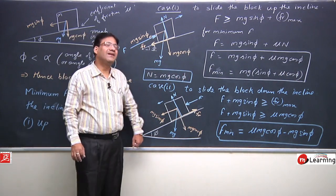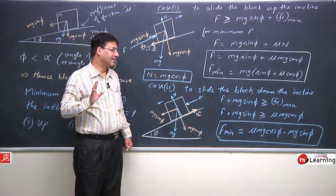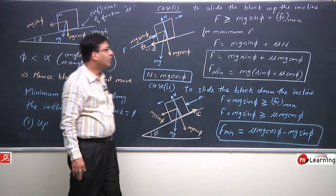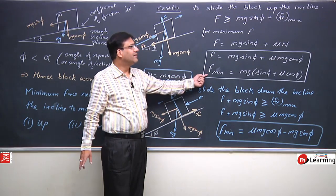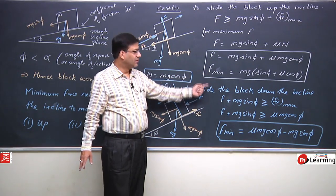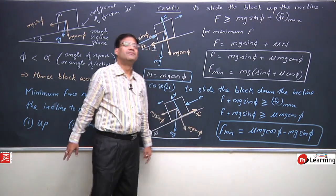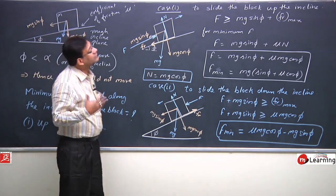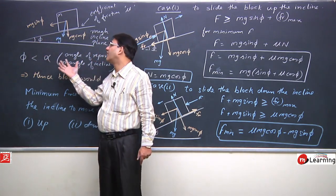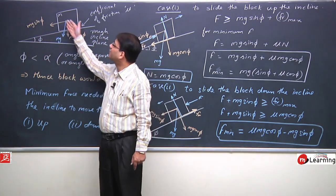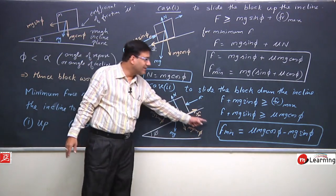To summarize: the force to take the block up the incline is mg(μcosφ + sinφ), and the force to bring the block down the incline is mg(μcosφ − sinφ). This additional force is needed when the angle of incline φ is less than the angle of repose α, since in that case mg sinφ alone is not enough to bring the block down.